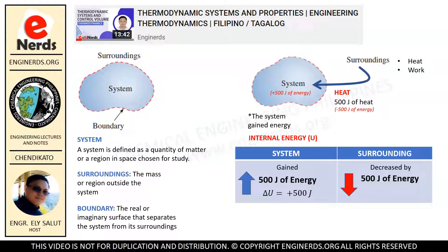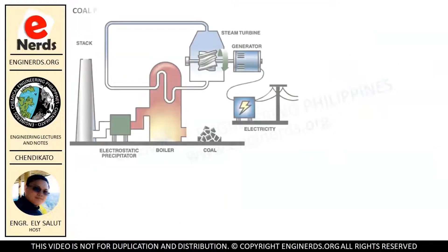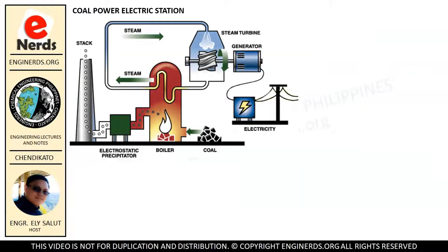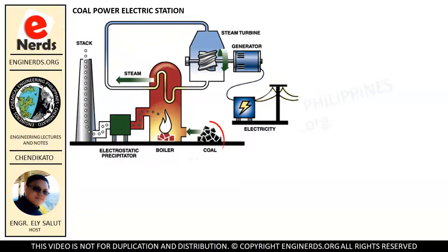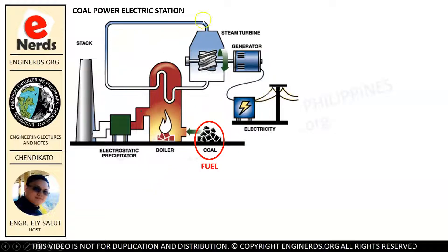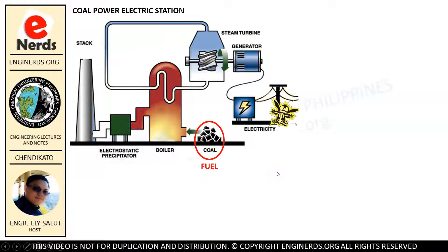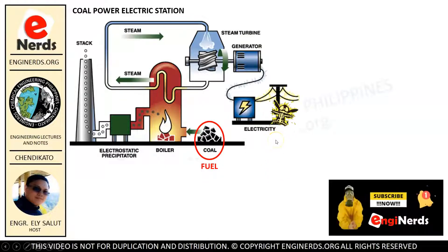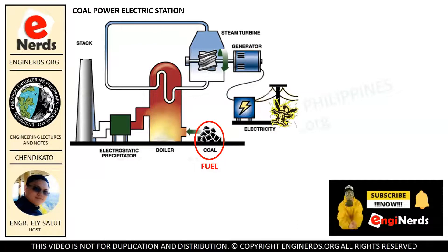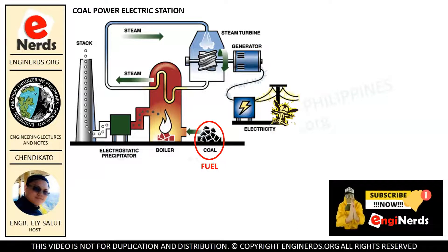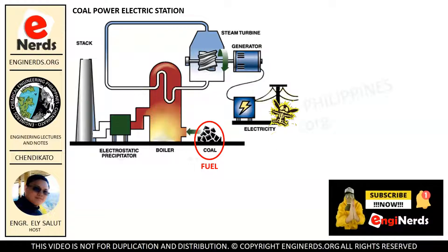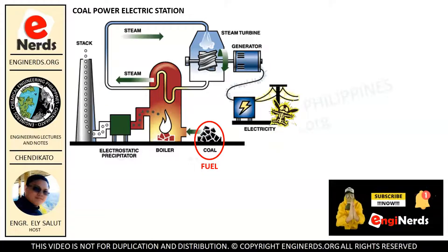What do we mean that energy is changing from one form to another? Let us have a look at this coal power electric station. As you can see, we have coal as our fuel, which is eventually used to produce electricity. Let us go through this one by one to understand how the first law of thermodynamics is involved in this coal power electric station.